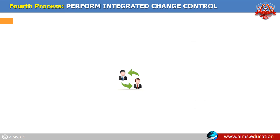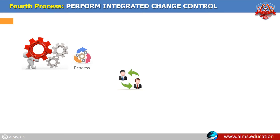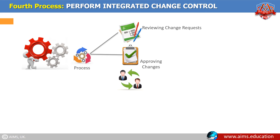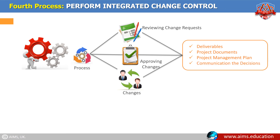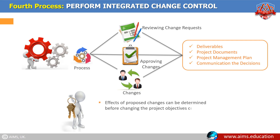Fourth process: perform integrated change control. It is the process of reviewing all change requests, approving changes and managing changes to deliverables, project documents, and the project management plan, and communicating the decisions. Key benefit: during this process, the effects of proposed changes can be determined before changing the project objectives or plans, which reduces possible risks and allows project managers to make better decisions.